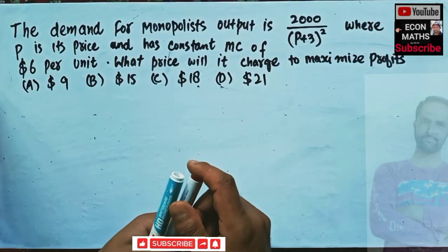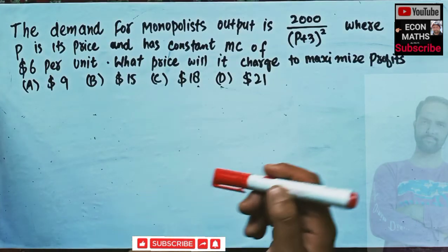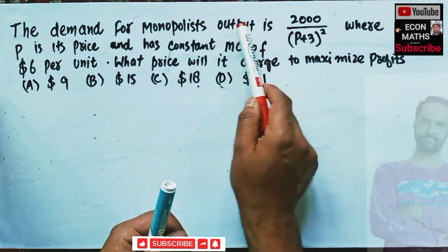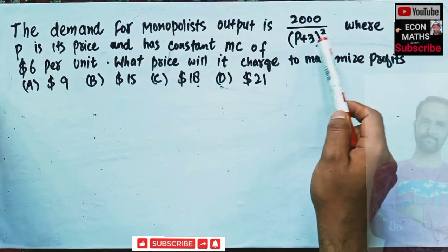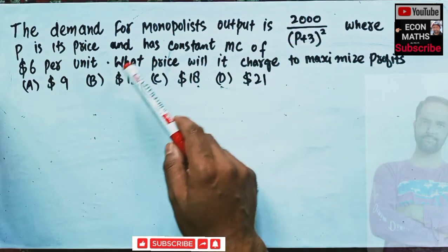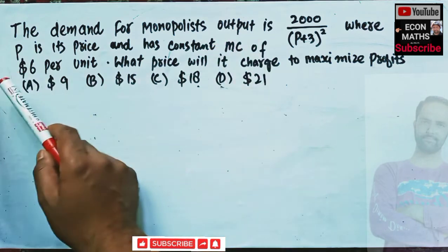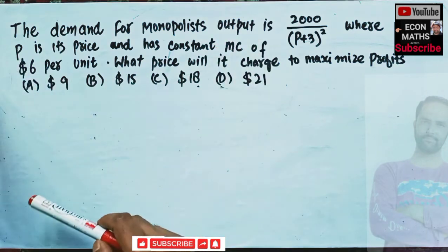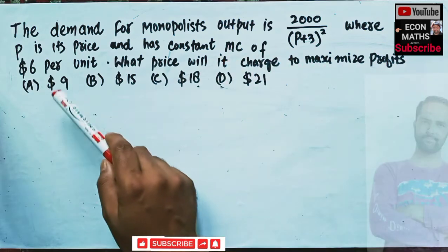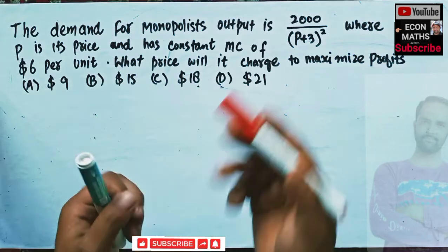Let us solve a question on profit maximization in the case of monopoly. The question is: the demand for the monopolist's output is Q = 2000 / (P + 3)², where P is the price. The marginal cost is constant at six dollars per unit. What price will it charge to maximize its profits? The options are 9, 15, 18, or 21 dollars.